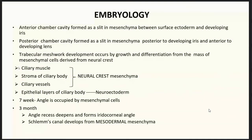Now let's discuss embryology. The anterior chamber cavity is formed as a split in mesenchyme between the surface ectoderm and the developing iris. The posterior chamber cavity is formed as a split in mesenchyme posterior to the developing iris and anterior to the developing lens. The trabecular meshwork development occurs by the growth and differentiation of cells from mesenchyme derived from neural crest cells. Ciliary muscles, stroma of the ciliary body, and ciliary vessels are derived from neural crest mesenchyme, whereas the anterior layers of the ciliary body are derived from neuroectoderm. The angle is occupied by mesenchymal cells from which the trabecular meshwork develops. At the third month, the angle base deepens, forming the corneal angle, and Schlemm's canal develops from mesodermal mesenchyme.